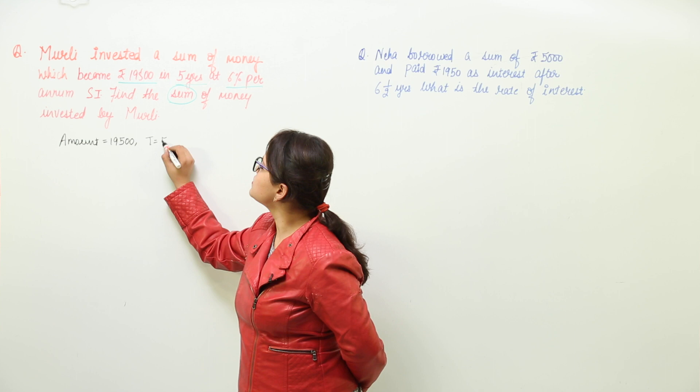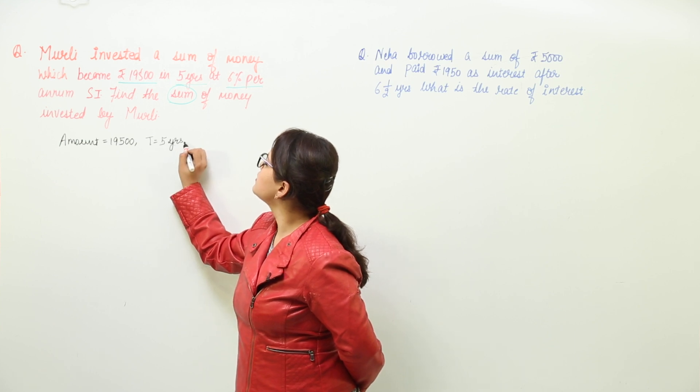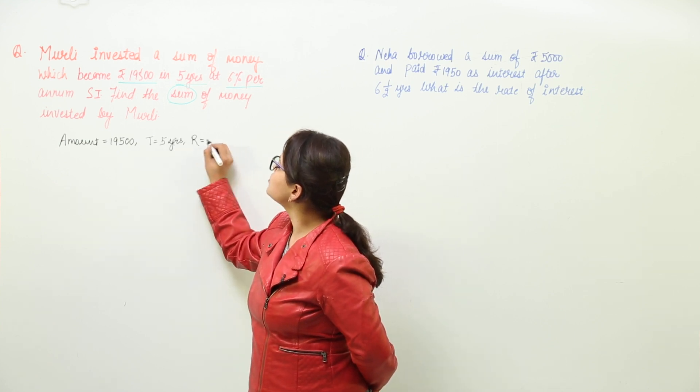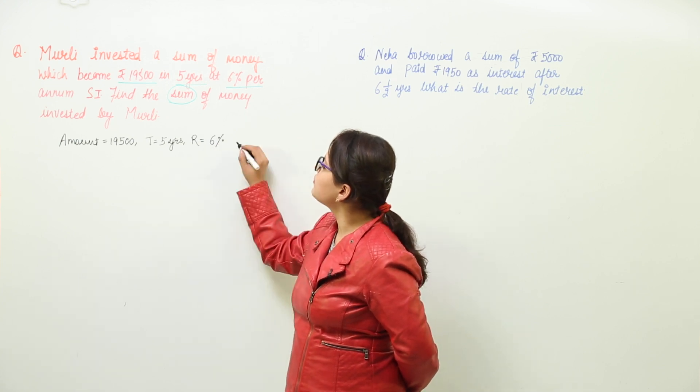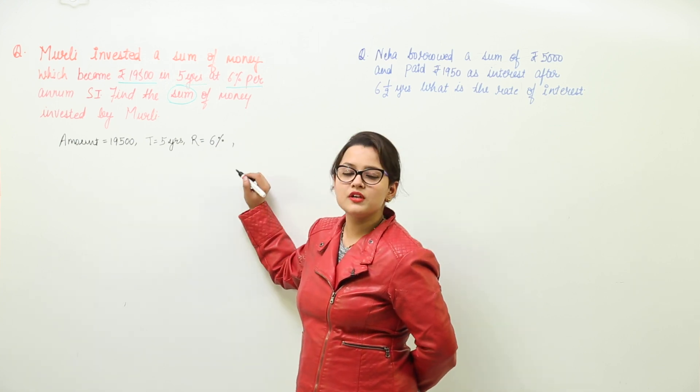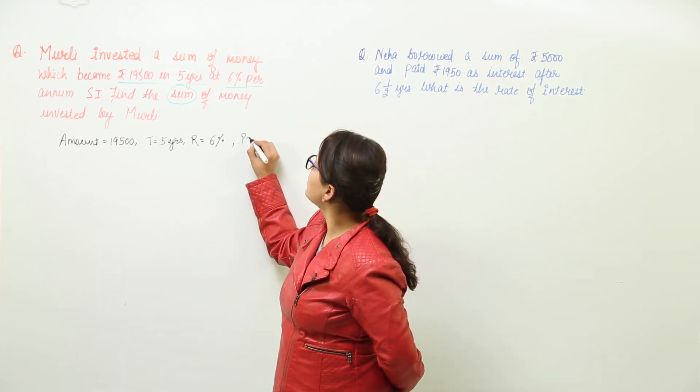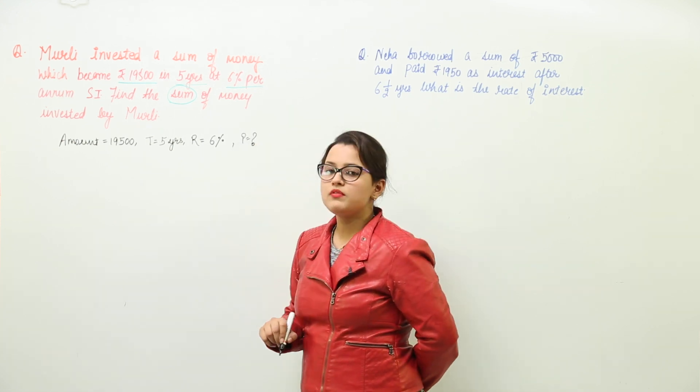The time is given in years which is 5 years. The rate of interest charged was 6% per annum. And we have to find the sum. Now sum here represents the principal. So we have to find out the principal invested.